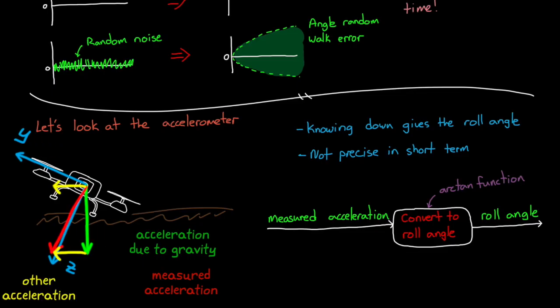Any time the drone accelerates in any direction, the measurement is no longer just from gravity. Now, we could ignore accelerations that are outside of some boundary, but even really small accelerations can throw off the estimation of the down direction, and then therefore the roll angle. Even rolling the drone will induce a linear acceleration if the IMU isn't located precisely at the center of rotation.